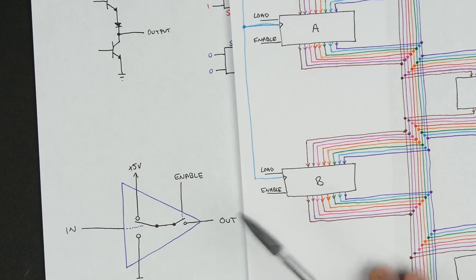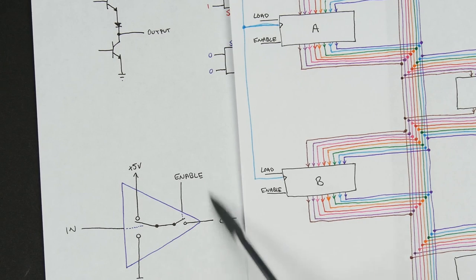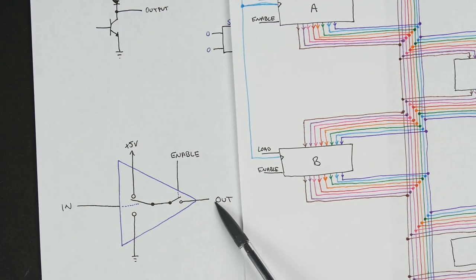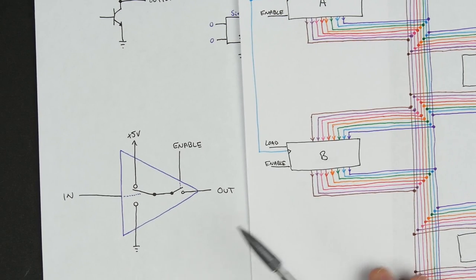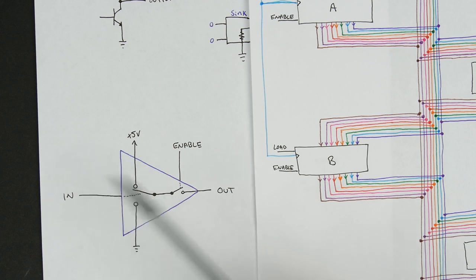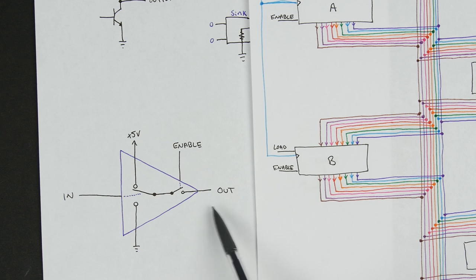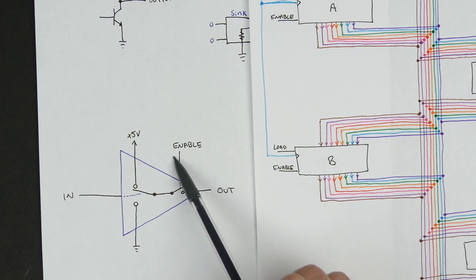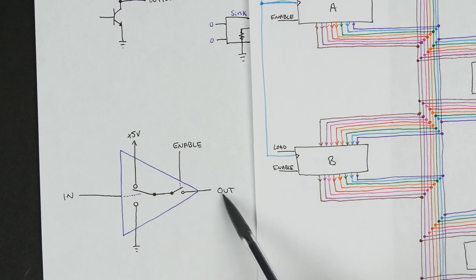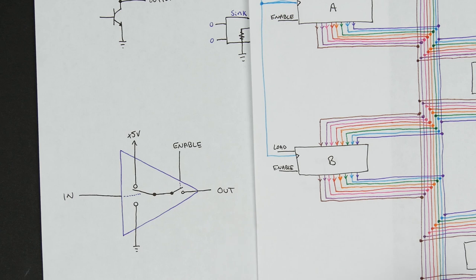Fortunately, they make gates like this. They're called tri-state gates because they have three output states: there's a 0, or a 1, or a disabled state — a sort of not-connected state. Sometimes you'll see it referred to as high impedance or high-Z.